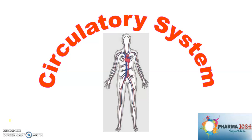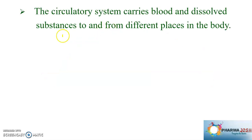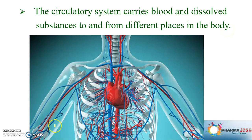Namaste dear students, today we discuss about the circulatory system. The name itself says 'circulatory' — that means it circulates something inside the body. The circulatory system carries blood and dissolved substances to and from different places in the body.